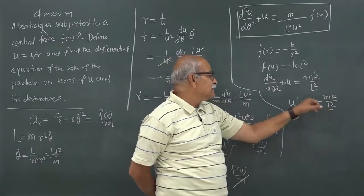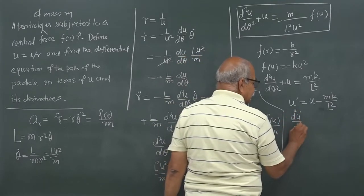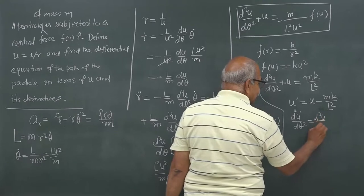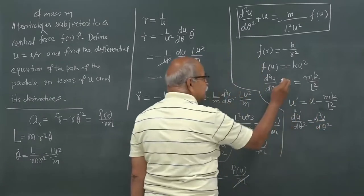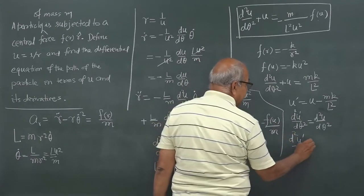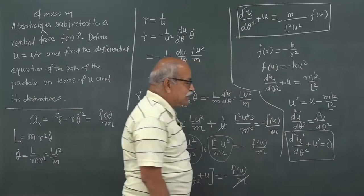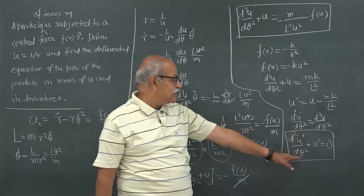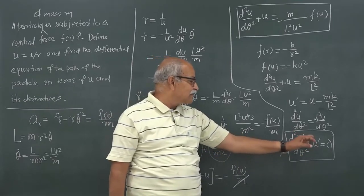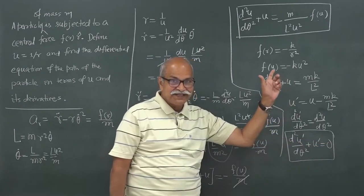Define u′ = u − mk/L². Since mk/L² is a constant (angular momentum is constant throughout the motion), d²u′/dθ² = d²u/dθ², and the equation becomes d²u′/dθ² + u′ = 0. This is exactly the simple harmonic motion equation d²x/dt² + ω²x = 0, and you know its solution.